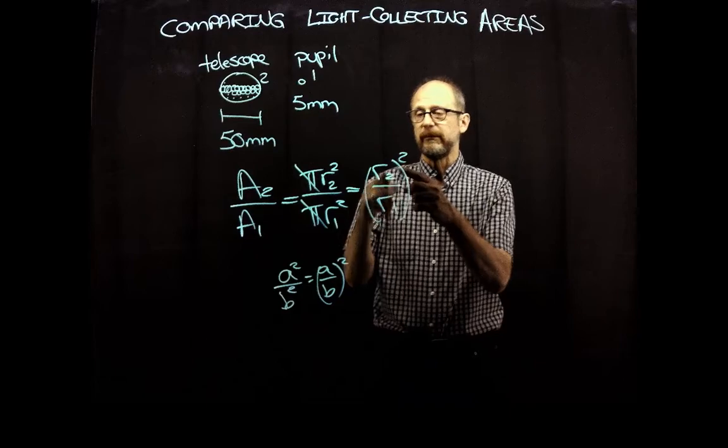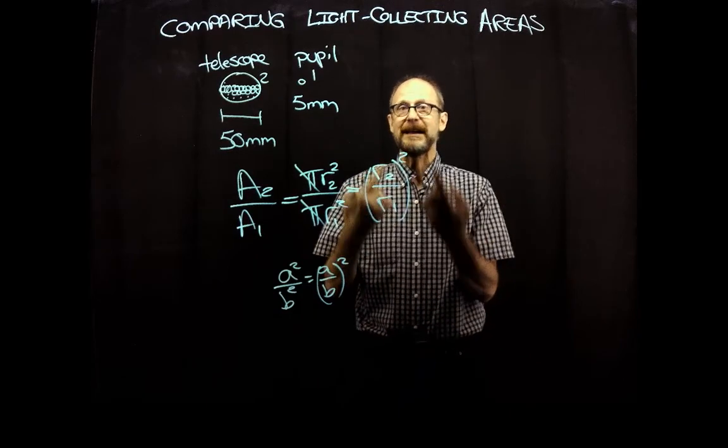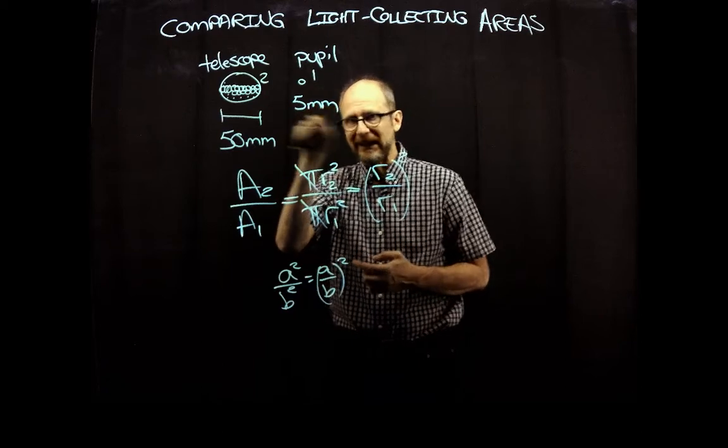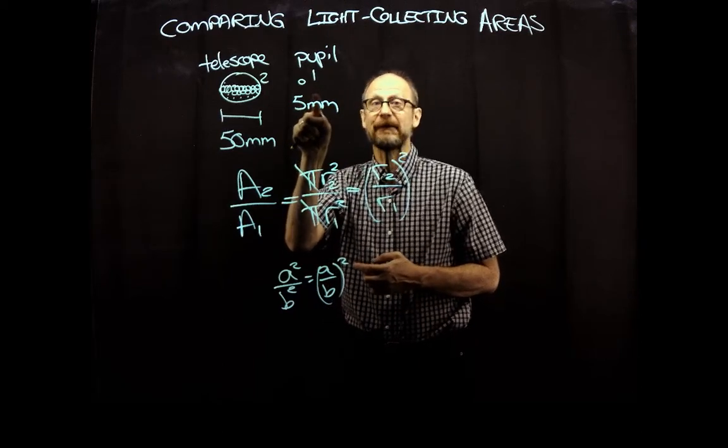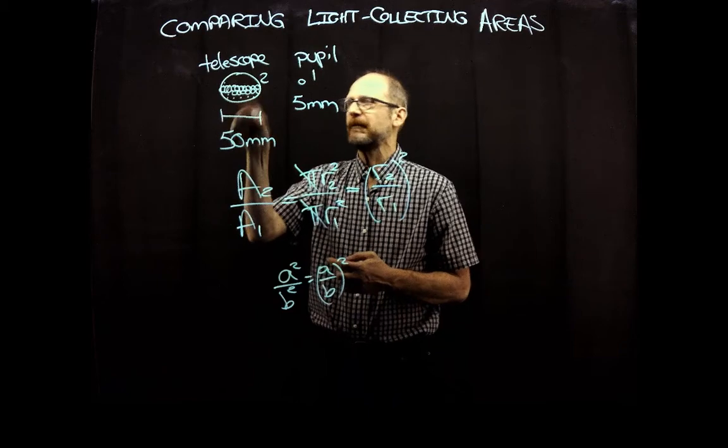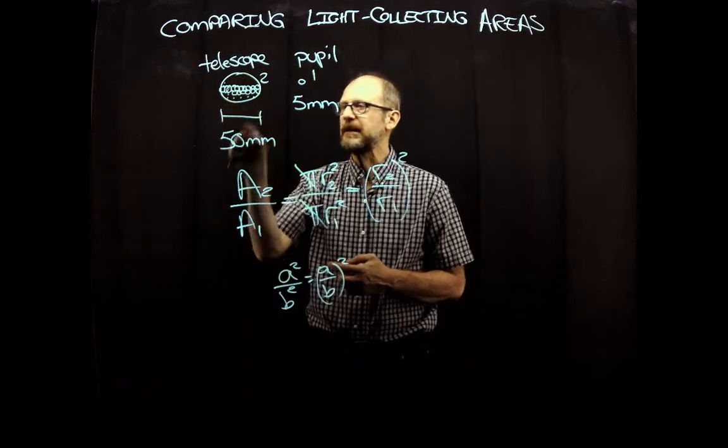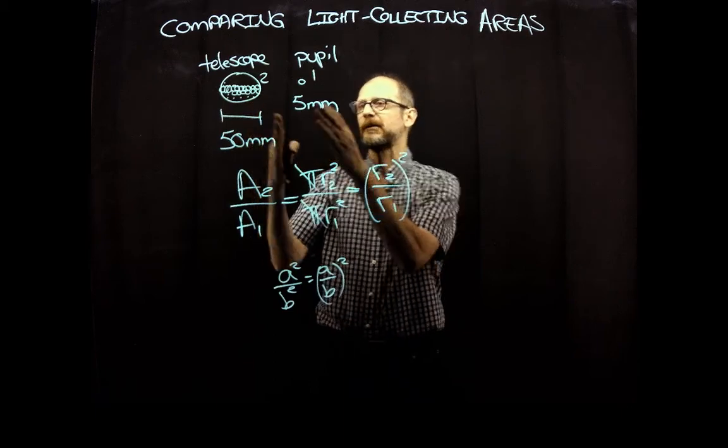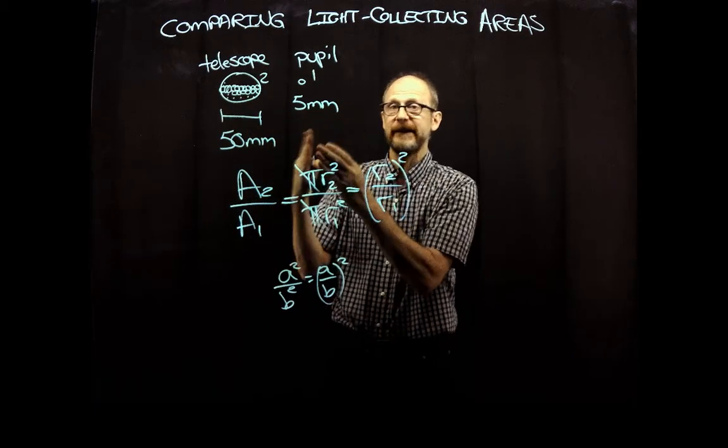Now the ratio of the radii, though, is the same as the ratio of the diameters. In other words, the radius of this pupil in my example is two and a half millimeters, half the diameter. The radius of this, the diameter is 50, therefore it's 25 is the radius. So 25 versus two and a half, well that's a ratio of 10.